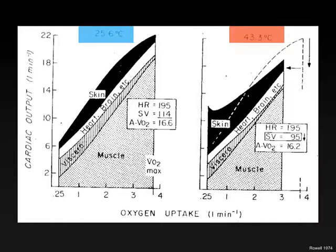The big difference between these two figures is shown at the top. This summarizes some of the changes in that last schematic — 25-degree neutral environment on the left, 43-degree hot environment on the right. This shows, of the total cardiac output required for a given intensity, how it's distributed. The top of each figure is cardiac output in liters per minute, and the layers show where that cardiac output goes: either to muscle, the viscera meaning the internal organs, the heart and the brain, or the skin to help cool the body.